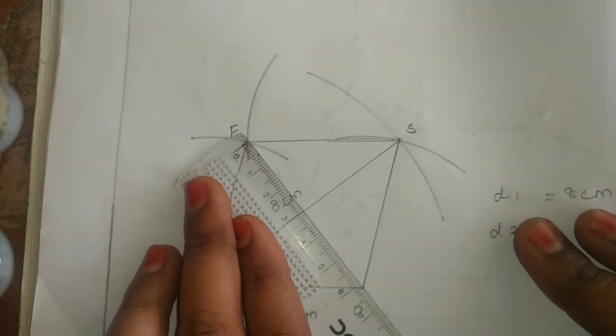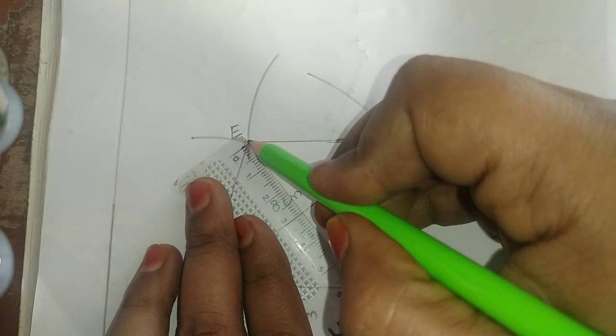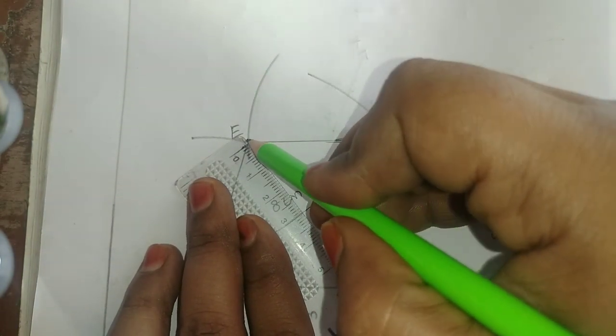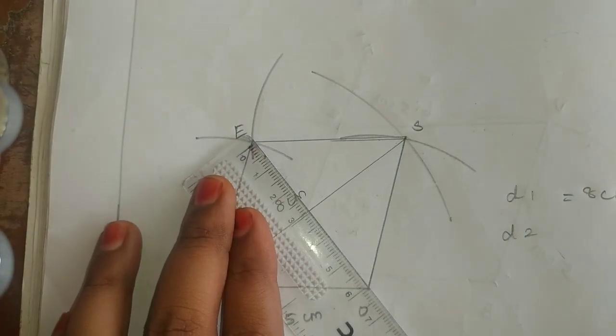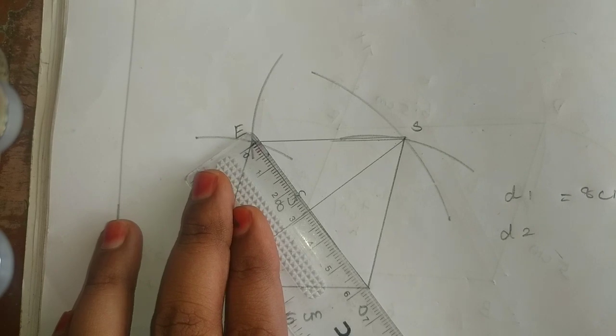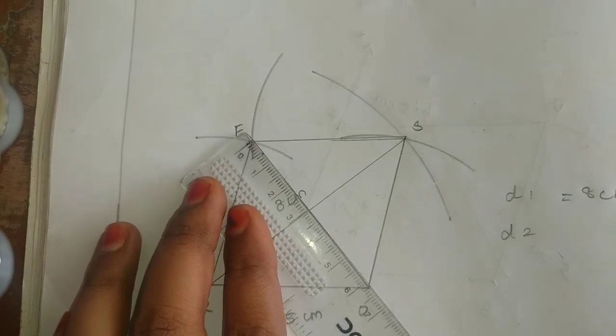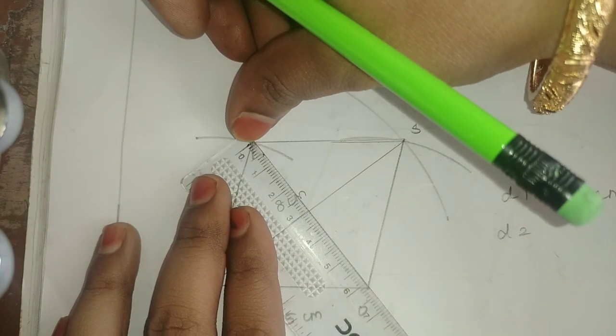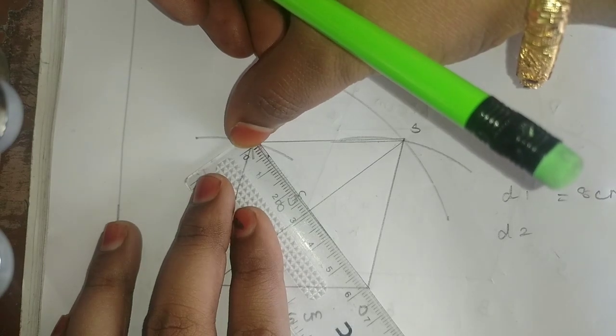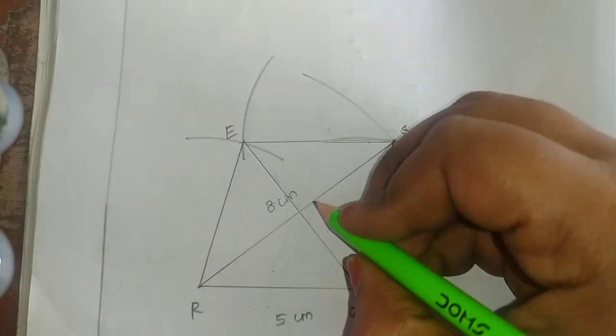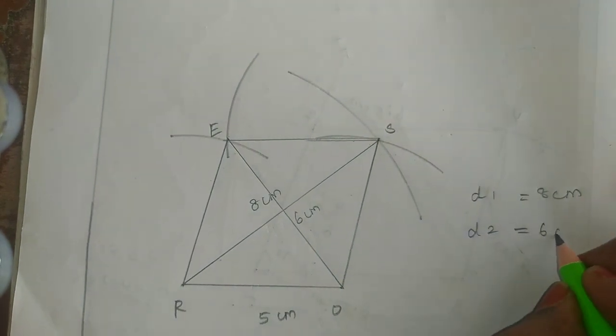We will first draw the line. Join the diagonal. How do you measure the line? Do you see the line? I will place the line. I will measure the line. How do you measure the line? 6cm. Diagonal 2 will be 6cm.